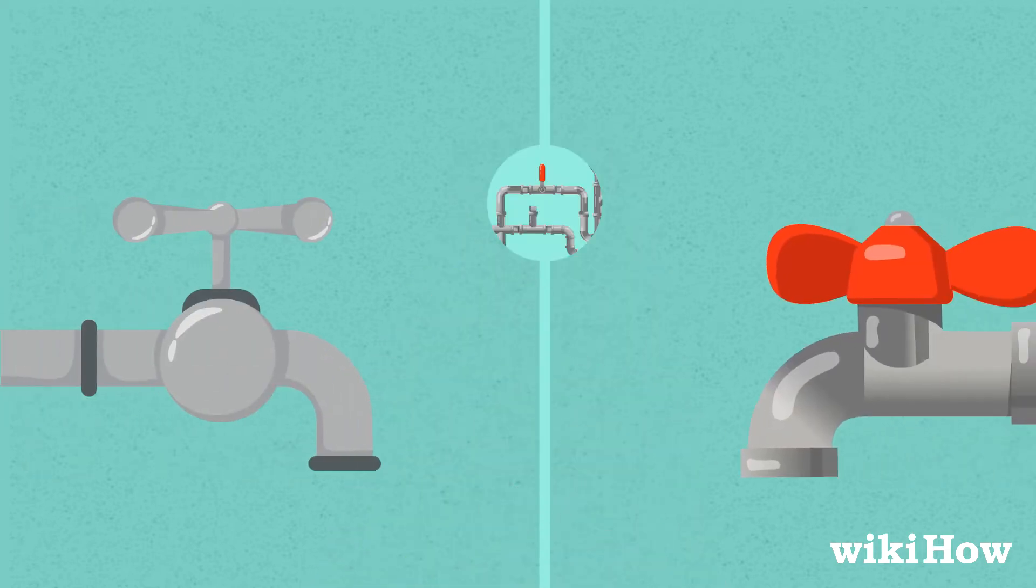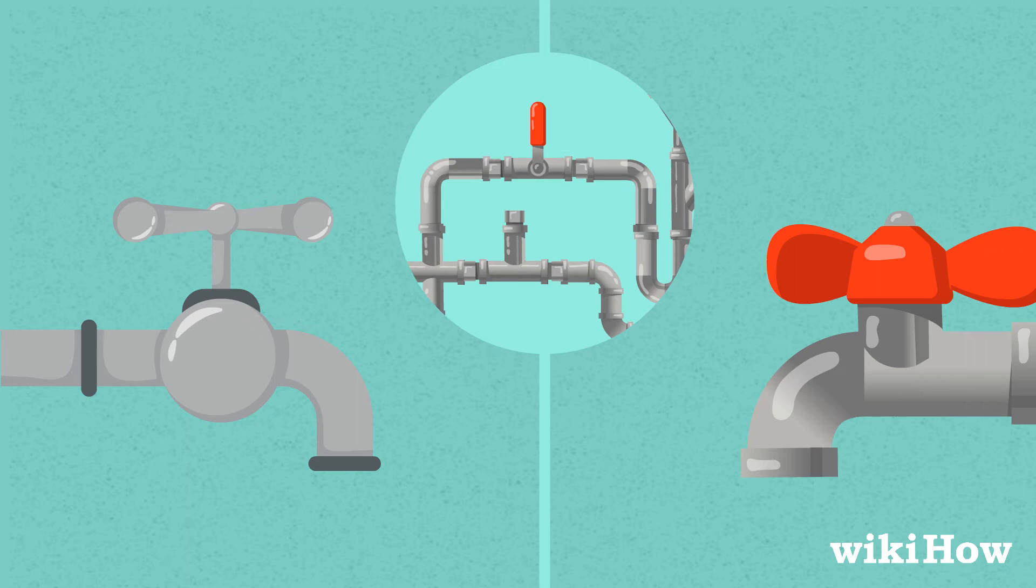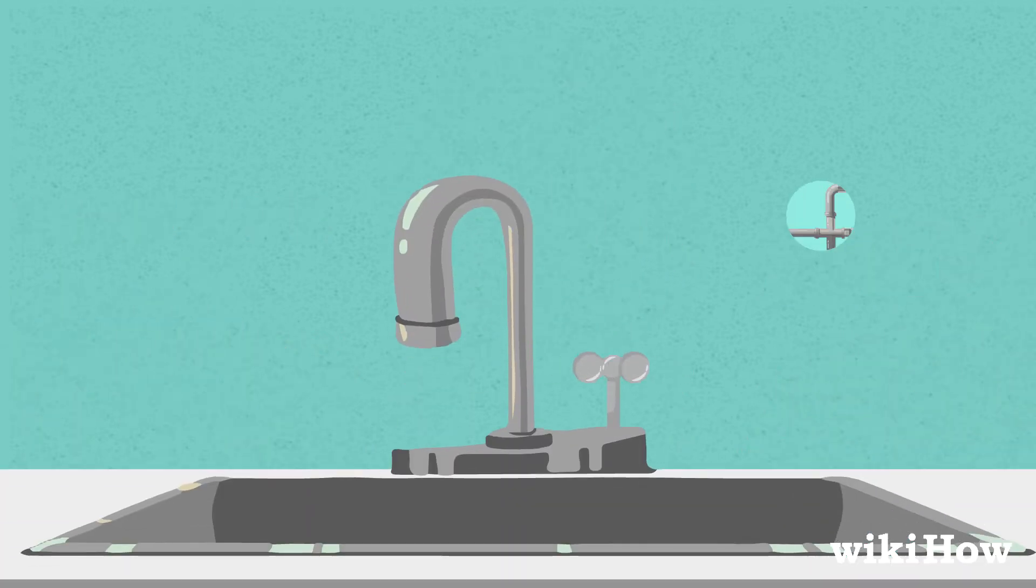If you think the water has been shut off at the main valve, start by turning off all the faucets in the building except for one. Leaving one faucet on will help equalize the pressure in the pipes.